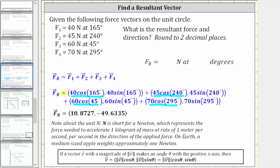And for the y component of the first force vector, we have 40 times sine 165 degrees. For the second force vector, the y component is 45 times sine 240 degrees. For the third, we have 60 times sine 45 degrees. And finally, for the fourth, the y component is 70 times sine 295 degrees.